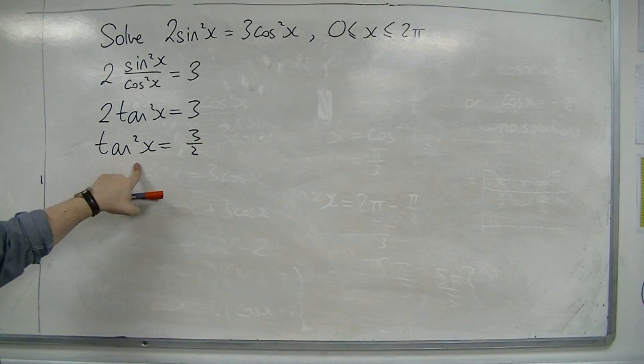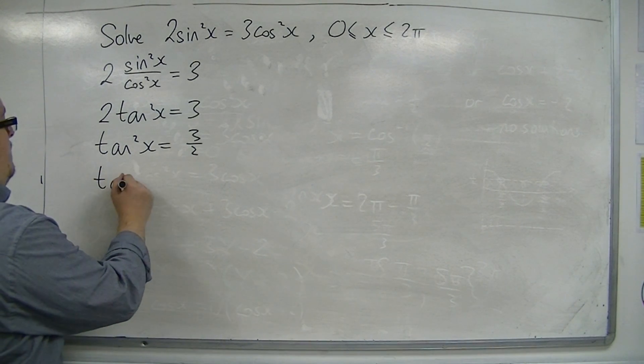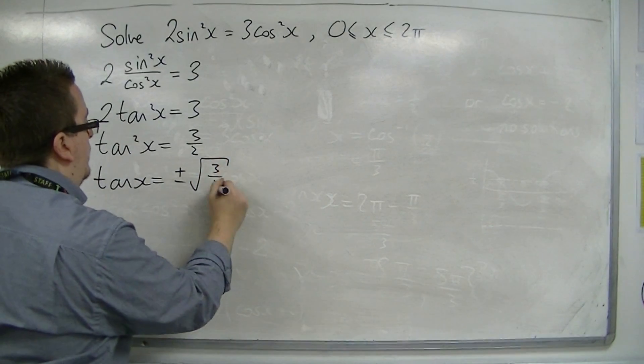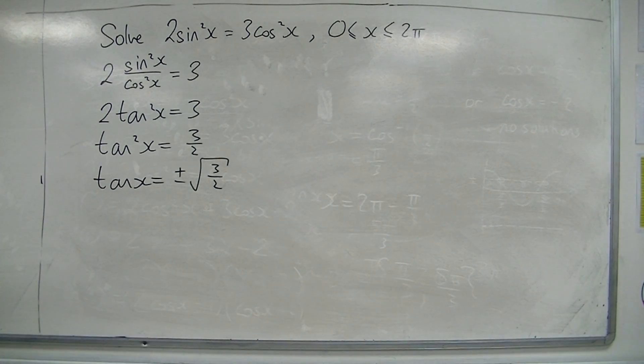In solving tan squared equals 3 halves, we're going to have to square root both sides, but remember that that's going to throw up a plus minus. So we're looking at tan x equals plus or minus the square root of 3 halves.